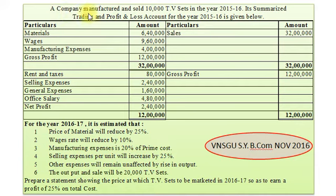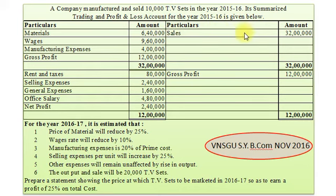A company manufactured and sold 10,000 TV sets in the year 2015-16. Its summarized trading and profit and loss account for the year ended 2015-16 is given below. Particulars: Sales Rs. 32,00,000. Materials Rs. 6,40,000.